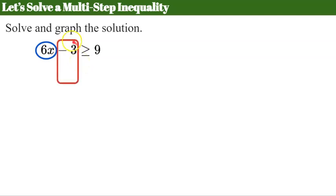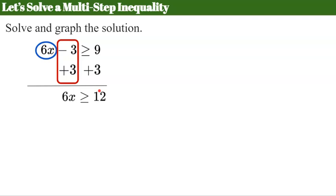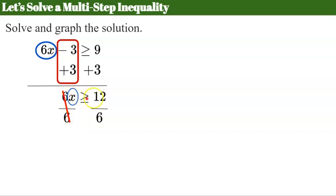I identify that my variable term 6x is being subtracted by 3. So I need to create a zero pair so that I'm left with just 6x on the left. The inverse of subtract 3 is to add 3 to each side — this creates a zero pair. I'm left with 6x greater than or equal to 12. Now I need to get x all by itself with a coefficient of 1. The inverse of multiply by 6 is to divide by 6 on both sides. 6 divided by 6 is 1, leaving me x greater than or equal to 12 divided by 6, which is 2.